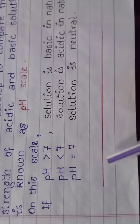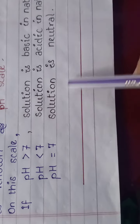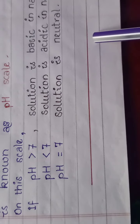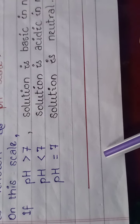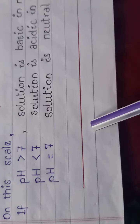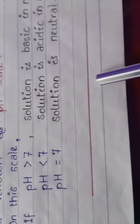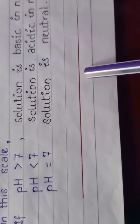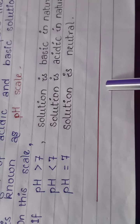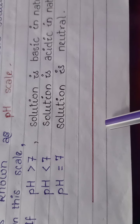The pH scale starts from 0 to 14. When pH value is 0 to 6, it defines the acidic nature of the solution. When pH value is 8 to 14, it defines the basic nature of the solution. When pH value is equal to 7, it defines a neutral value.